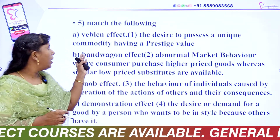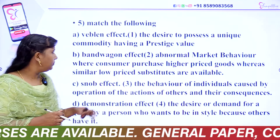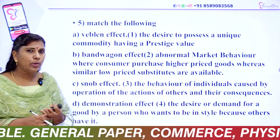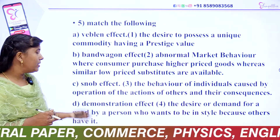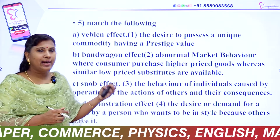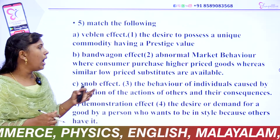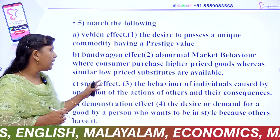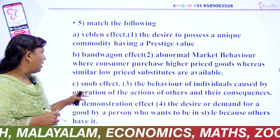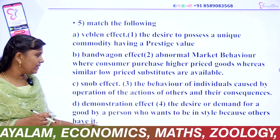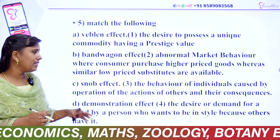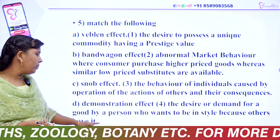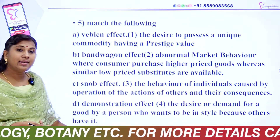Try to match the following: the Veblen effect is a unique commodity having prestige value. Bandwagon effect is point number 2. Abnormal market behavior where consumers purchase higher-price goods whereas similar low-price substitutes are available is the snob effect. The behavior of individuals caused by the operation of the actions of others and their consequences is the demonstration effect. The desire or demand for a good by a person who wants to be in style because others have it.